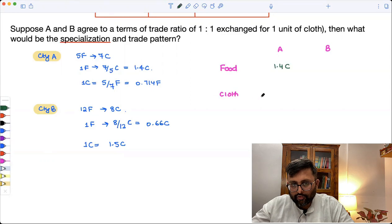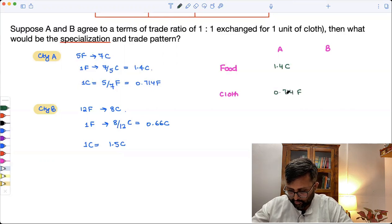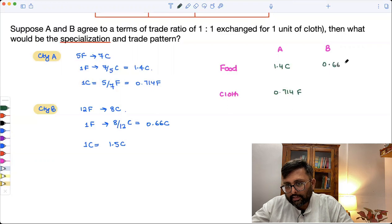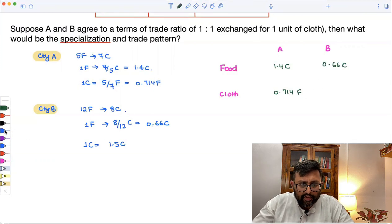In country A for cloth is going to be 0.714F. For country B this is going to be 0.66C.